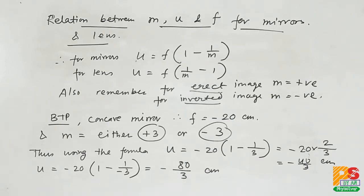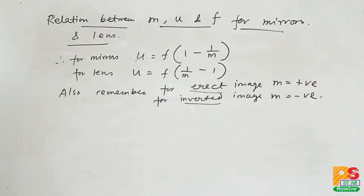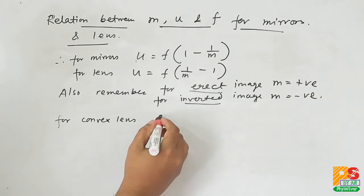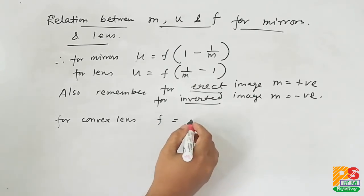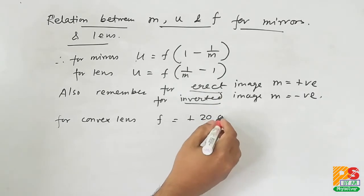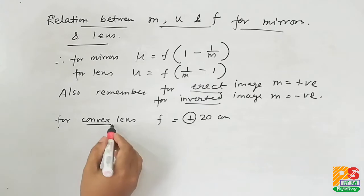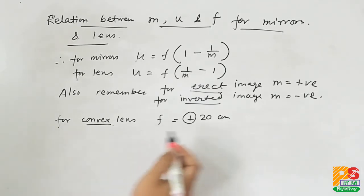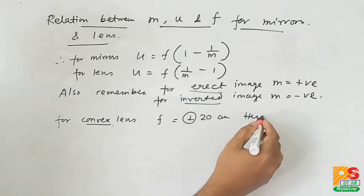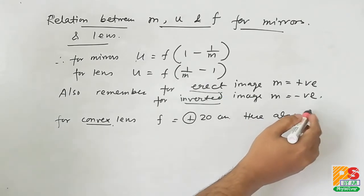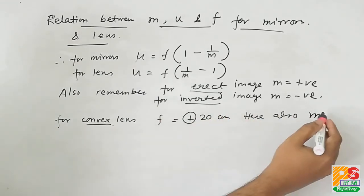Now coming to the next part. Here a convex lens is given. For this you have to use the second formula for lens. For convex lens, remember f is positive, so f is plus 20 centimeters. Again we will use two values of m: for erect m will be plus 3, and for inverted m will be minus 3.